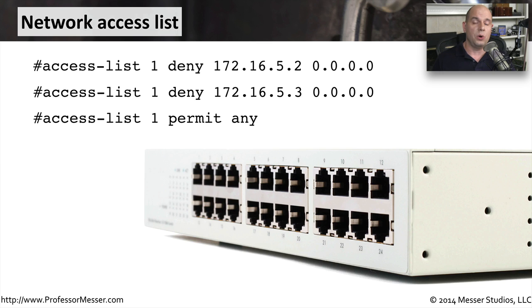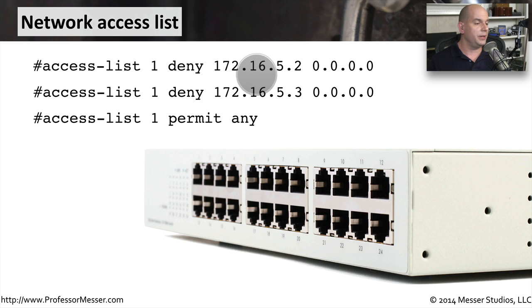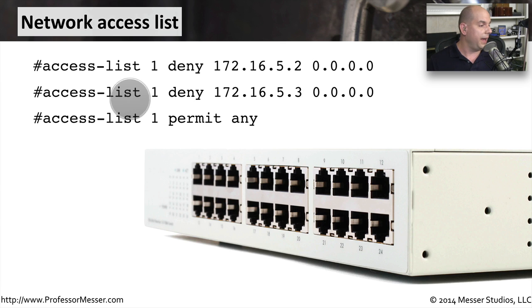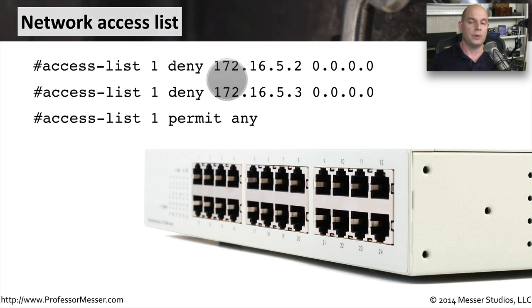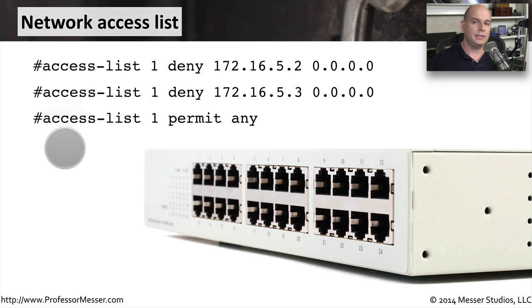Here's an example of an access control list you might see on a network device like a firewall or router. Access list 1 would deny any traffic coming from 172.16.15.2, with a mask specifying just that IP address. The same access list also has a deny statement for 172.16.5.3. So if these two IP addresses should never go across the network, these deny statements will block them. The last statement in the access list permits any traffic.